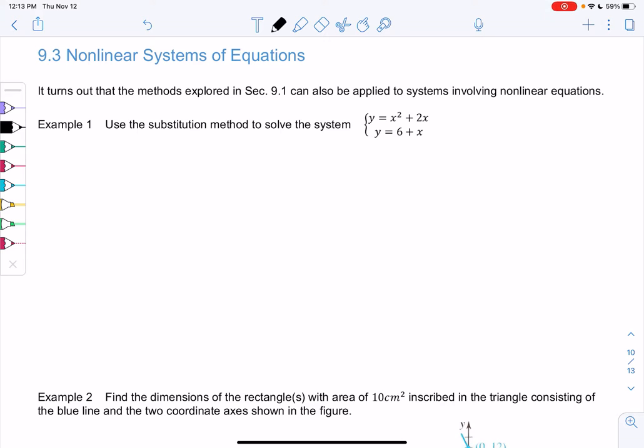So let's use substitution to solve the equation y equals x squared plus 2x and y equals 6 plus x. So since they both equal y, our substitution will just be setting them equal to each other.